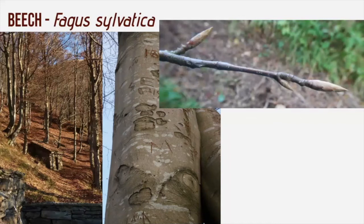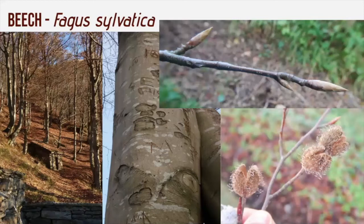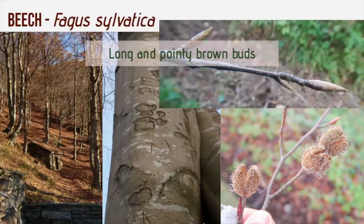The buds are long, thin, and pointy, with many overlapping scales — and they're quite edible before the leaves form; they're quite tasty to eat. The lateral buds stick out from the shoot. In some years there is a huge crop of oil-rich beech nuts. The years where you get a huge amount of beech nuts is called a mast year — mast being an old word for fruit of the forest. Historically, it was an important food for pigs through the tradition of pannage, the right for pigs and other animals to feed in woodlands. Remember: long and pointy brown buds.